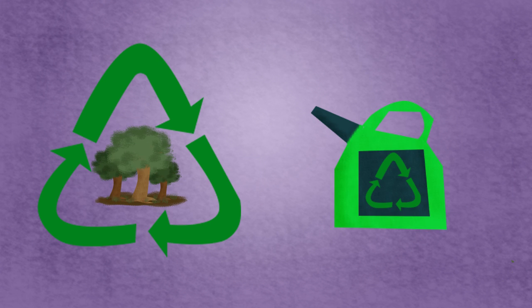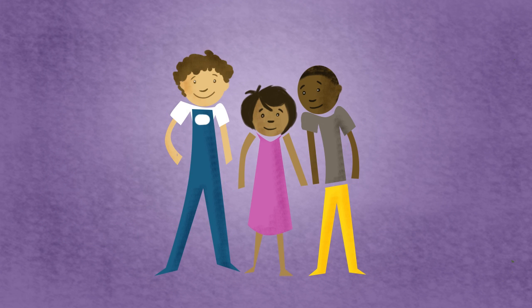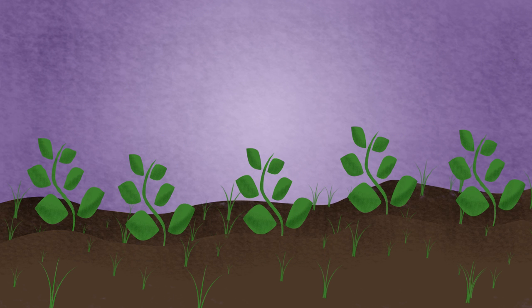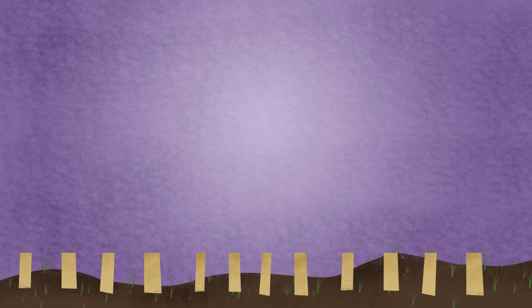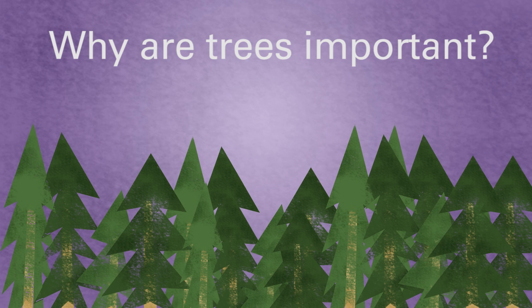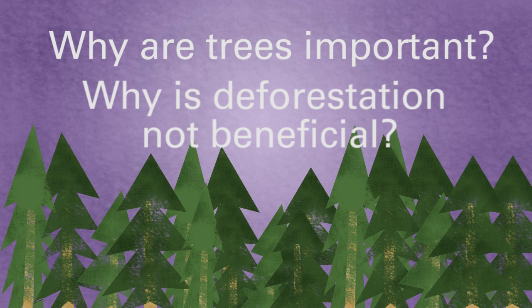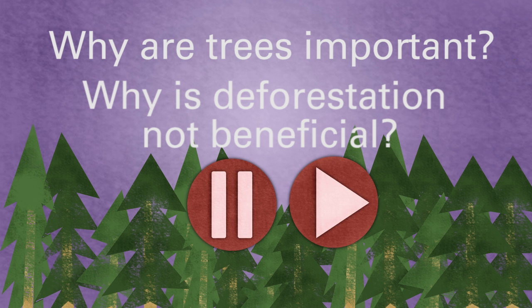The environmental effects of biofuels are also linked to the social effects. In order to gain land to grow crops suitable for biofuel production, massive deforestation has to take place. To understand the issue, think about what key process trees do, and why it isn't beneficial to the environment to have mass deforestation for land space. Pause the video, think about these questions, and continue when you're ready.